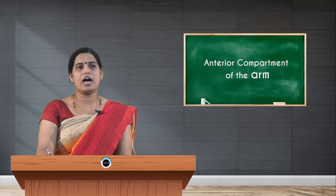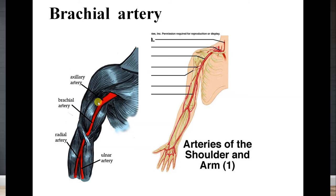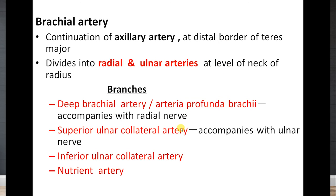Moving on to the artery of the compartment — the brachial artery. It is the continuation of the axillary artery at the lower border of teres major and runs over the brachialis muscle. In the cubital fossa it terminates into two terminal branches: the radial artery laterally and the larger ulnar artery medially. Other branches include the profunda brachii artery, which passes deeper with the radial nerve into the posterior compartment, along with the superior and inferior ulnar collateral arteries and a nutrient artery.